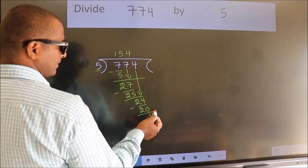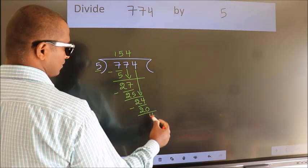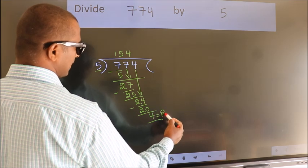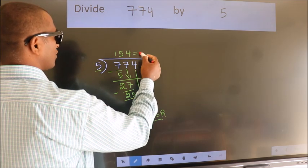No more numbers to bring it down, so we stop here. This is our remainder. This is our quotient.